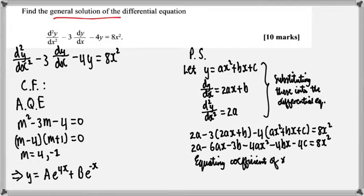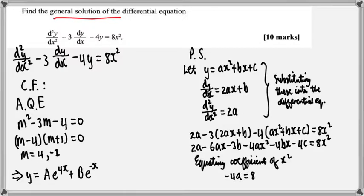We equate the coefficient of x² first. We only have one term in x² here, and it has the coefficient −4a. We put that equal to 8, because we're equating coefficients with the right-hand side. So, −4a = 8, which gives us a = −2.